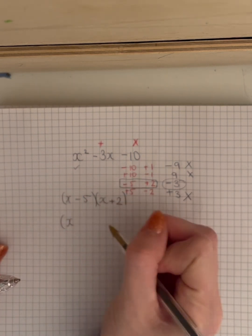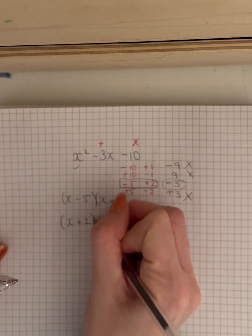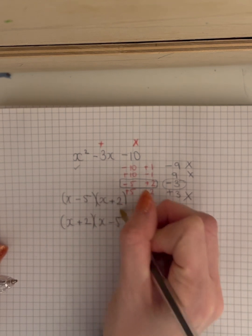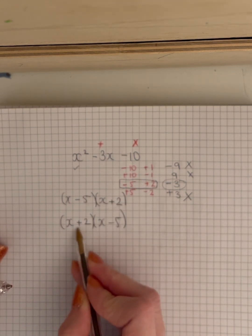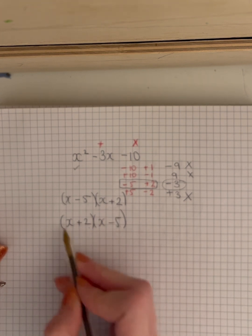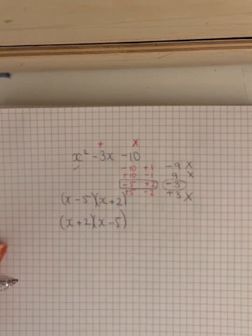So it doesn't matter if you write x plus 2 and x minus 5, because that minus is still attached to the 5, and the plus is still attached to the 2. So it doesn't matter which order you write the numbers in.